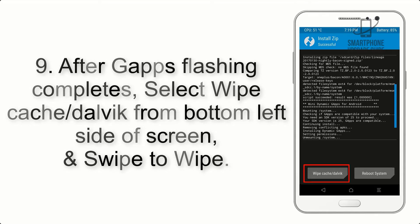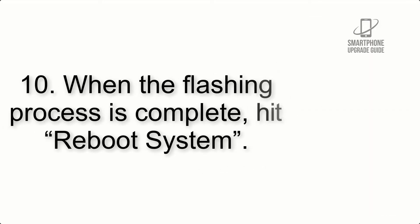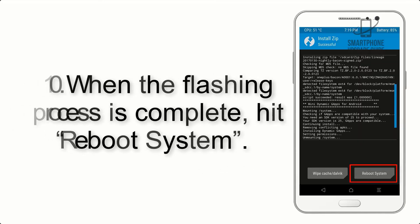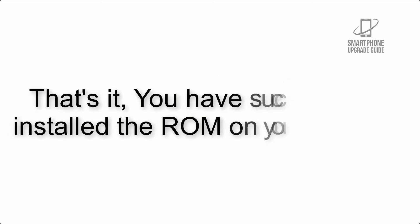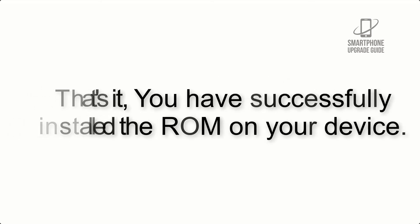Step 9: After GApps flashing completes, select Wipe Cache and Dalvik from the bottom left side of the screen and swipe to wipe. Step 10: When the flashing process is complete, hit Reboot System. That's it — you have successfully installed the ROM on your device.